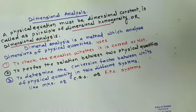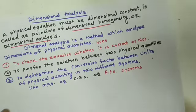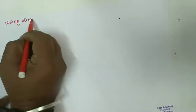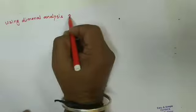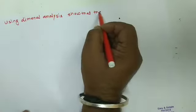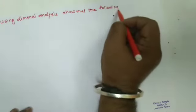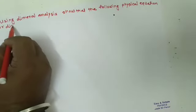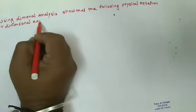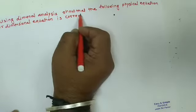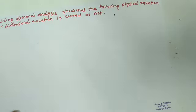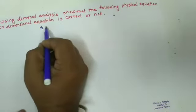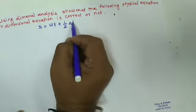The uses of dimensional analysis are: first, to check whether a given equation is correct or not; second, to derive the relation between two physical quantities; and third, to determine or find the conversion factor between units of a physical quantity in two different systems, like MKS, CGS, or FPS systems.